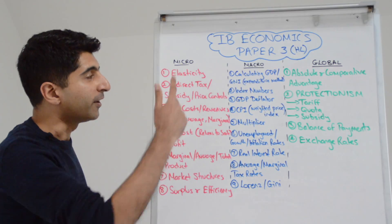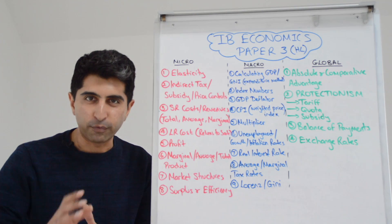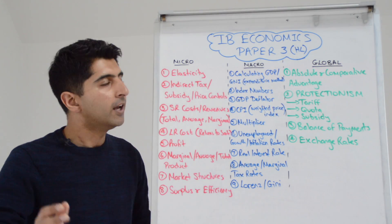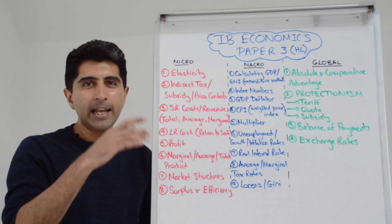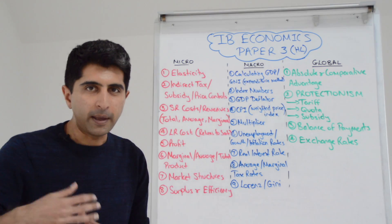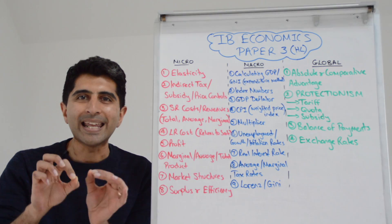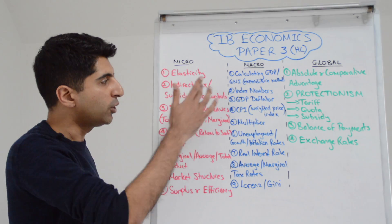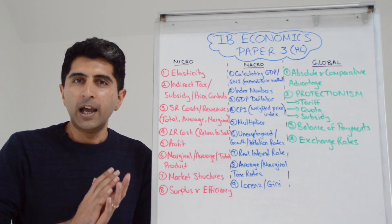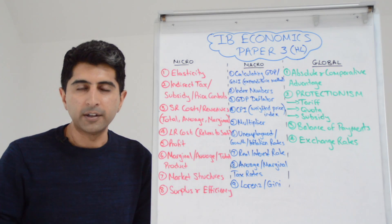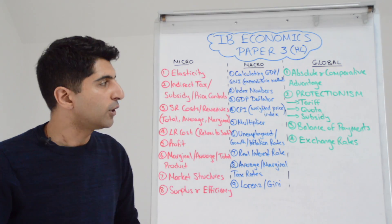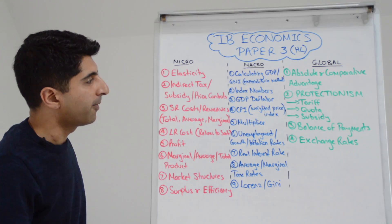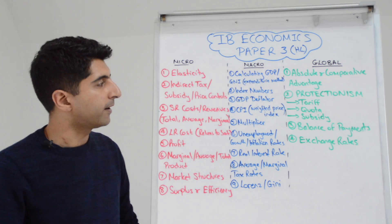Let's go through the course. In micro: elasticity — the three elasticities, the equations you need, and all the relevant material that comes with that. Indirect tax, subsidy, price controls — basic government interventions — really getting into the diagram. For example, being able to calculate government revenue, government costs, consumer burdens, producer burdens, producer revenues for price controls, and things like the cost of intervention buying for the government and the impact on producer revenue.